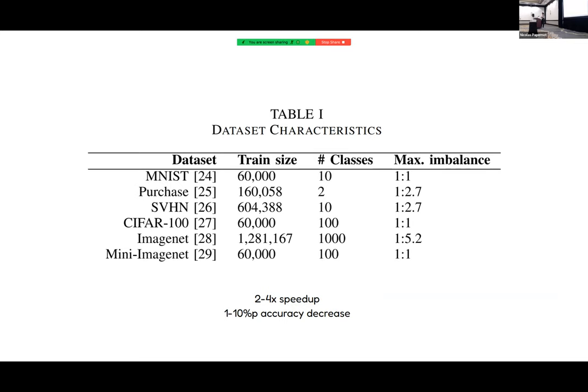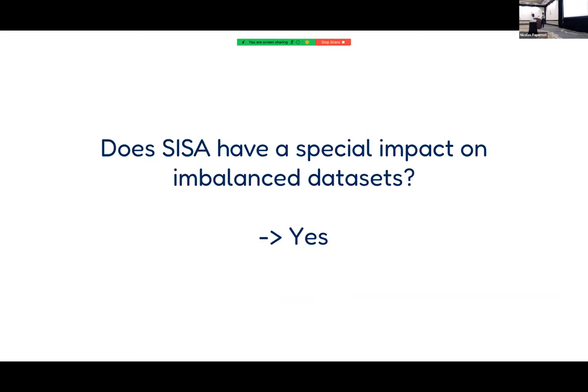The trade-off is a decrease in model accuracy — between one and ten percentage points depending on the task, reported as average accuracy. The datasets used were either perfectly balanced or had only a slight imbalance. For example, for ImageNet we only know that the accuracy decrease associated with SISA is about ten percentage points, but not the actual effect on majority or minority classes.